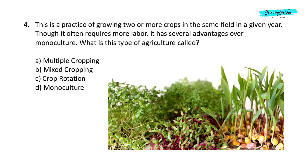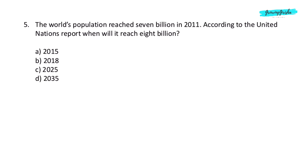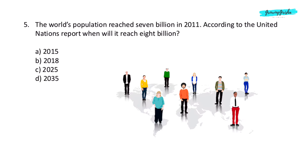Question 4. This is a practice of growing two or more crops in the same field in a given year. Though it often requires more labor, it has several advantages over monoculture. What is this type of agriculture called? Option A: Multiple cropping.